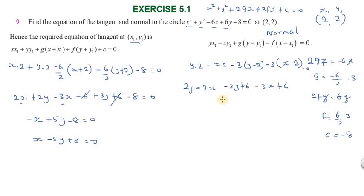Simplifying: 2y - 3y = -y, then 2x - 3x = -x. This gives -5x - y + 12 = 0.